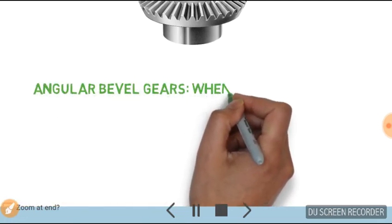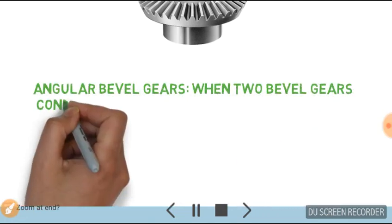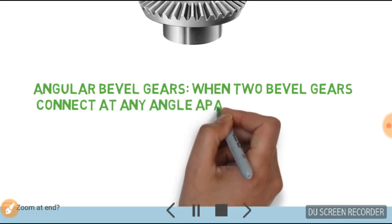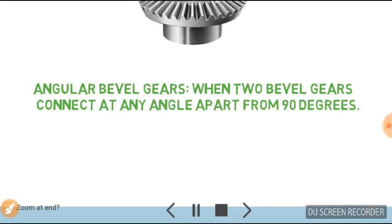Now when we are talking about angular bevel gears, this is defined as when two bevel gears connect at any angle apart from 90 degrees. This is the drawing of gears.